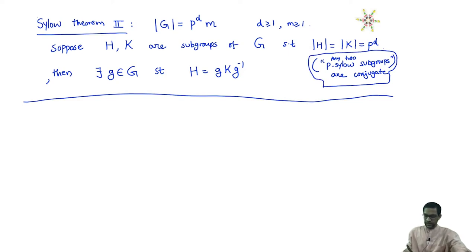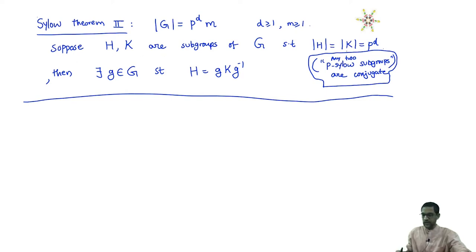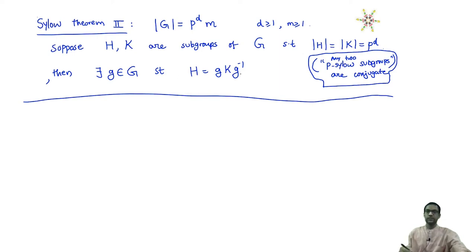More precisely, if P divides the cardinality of a finite group G, we write the cardinality of G as P power D times M. D is some number 1 or more and M can be similarly 1 or more. Suppose we have two subgroups H and K of G whose cardinalities are equal to P power D, the maximum power of P which divides the cardinality — in other words, H and K are what we call P-Sylow subgroups. Then we can find a group element G such that H can be written as G K G inverse; in other words, H and K are conjugates of each other.